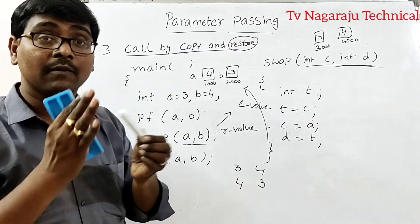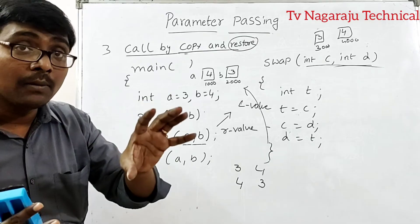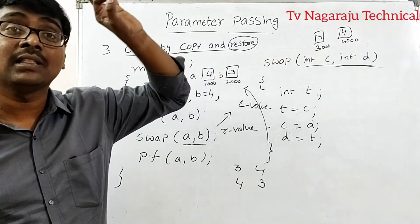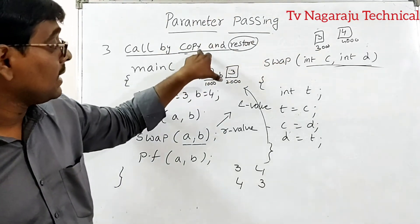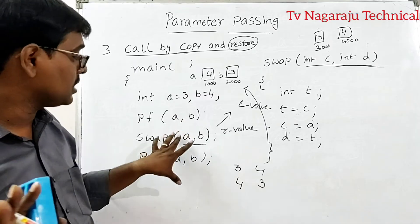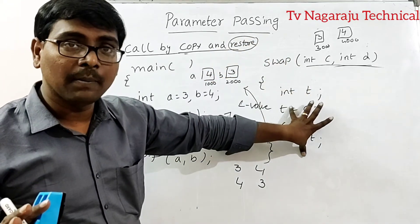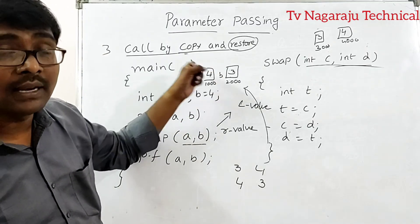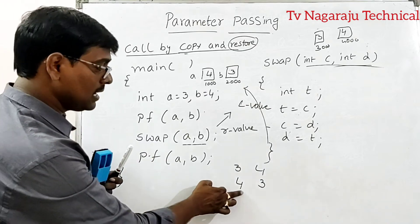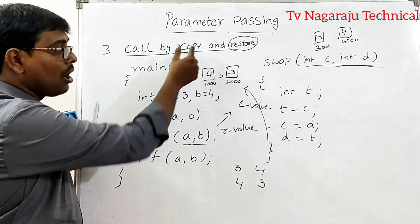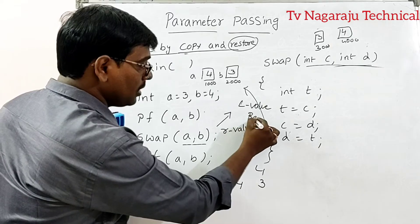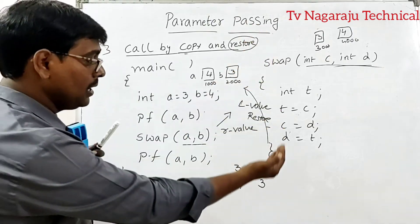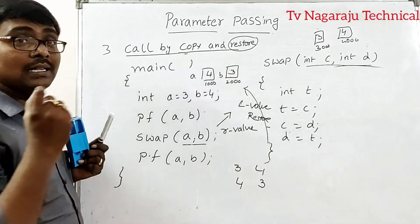The difference between call by reference and call by copy-restore: in call by reference, we directly pass the address and operate on it. In call by copy-restore, we do not pass the address — we just pass the value, perform the operation, and then coming back, we update the addresses. The result is 4 and 3. Copying actual to formal is called copy; restoring formal back to actual is called restore.